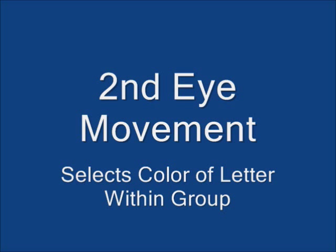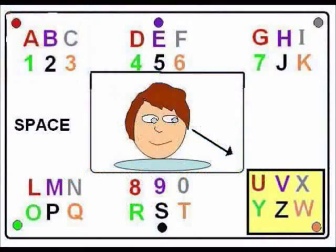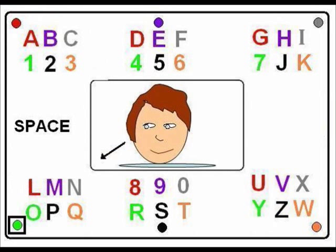Let's try the next letter, Y. First, the user gazes at the orange group since the Y is part of this group. The partner calls out 'orange.' Second, he gazes at the green dot. The partner calls out 'green.' The partner now knows it is the green letter within the orange group and calls out Y.